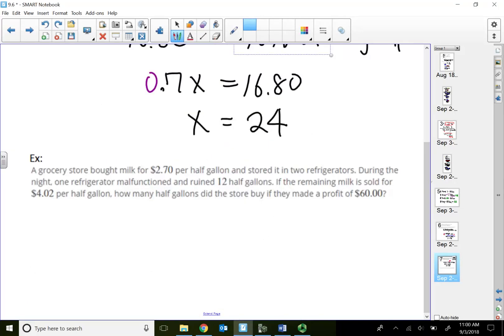All right, let's take a look at this problem. Very interesting. A grocery store bought milk for $2.70 per half gallon, store it in two different refrigerators. During the night, one refrigerator malfunctioned and ruined 12 half gallons of milk. If the remaining milk is sold for $4.02 per half gallon, how many half gallons did the store buy if they made a profit of $60? So the question is asking how many did they buy originally before the refrigerator malfunctioned? So x represents how many half gallons bought.